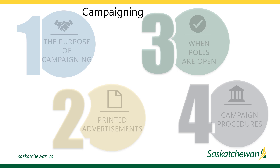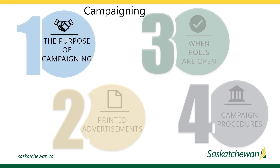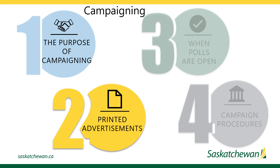Let's move on to the subject of campaigning. The purpose of campaigning for an election is for a candidate to convince electors that they are the best candidate for the job. It could involve talking to people, distributing brochures and posters, and perhaps paid media advertising. Every printed advertisement referencing an election must contain the name of the person who authorized its printing, display, and distribution.